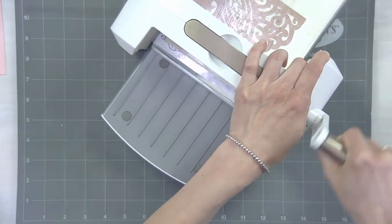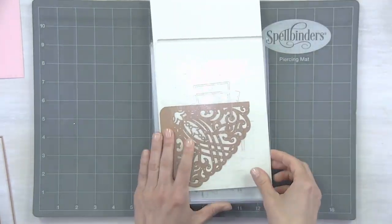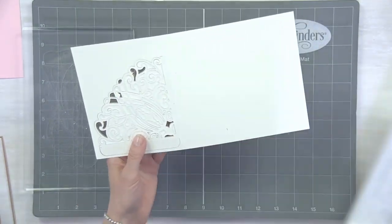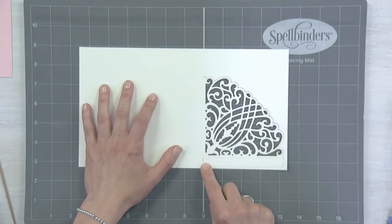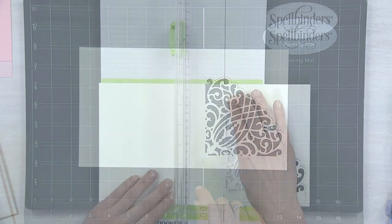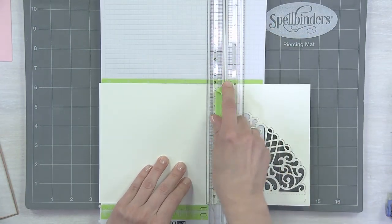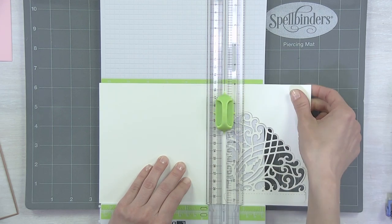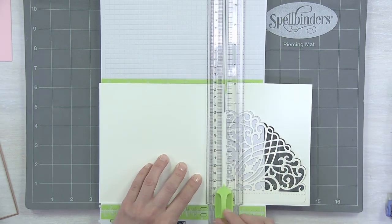So we're going to run that through our die cutting machine. There you go. Two passes through usually does it. This is a pretty easy to cut die. Now I'm going to bring my trimmer in. I'm going to trim off some of these sections off this top part. Just bring it right down to there.